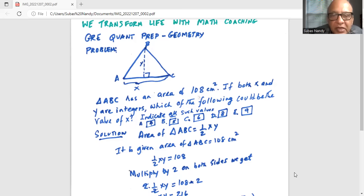Triangle ABC has an area of 108 centimeters square. If both x and y are integers, which of the following could be the value of x? Indicate all such answers. And they have given us five options.